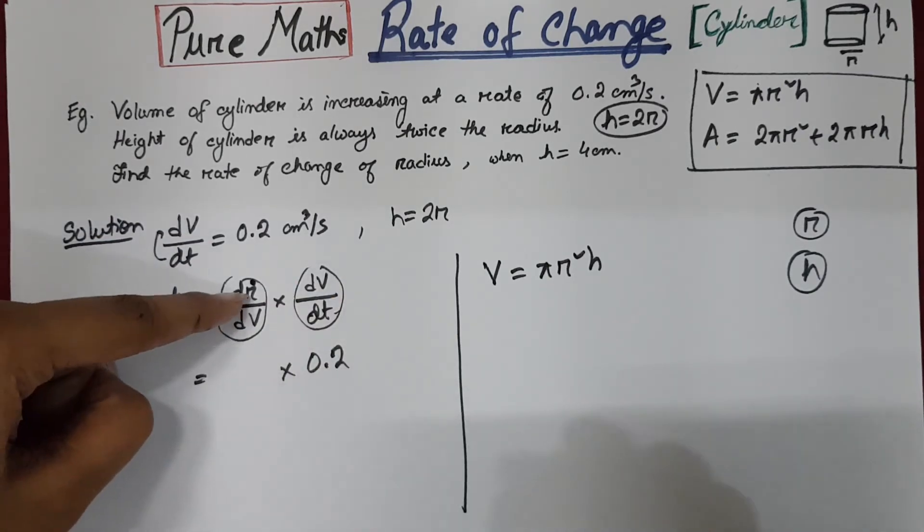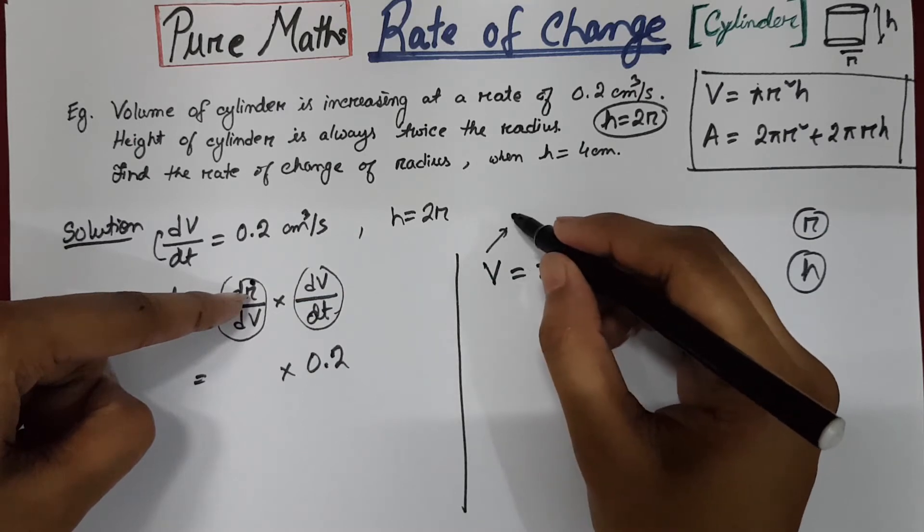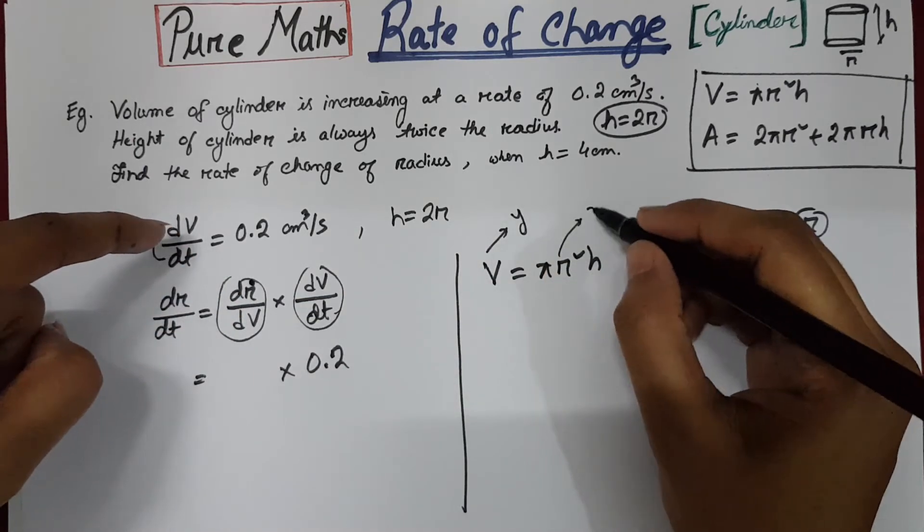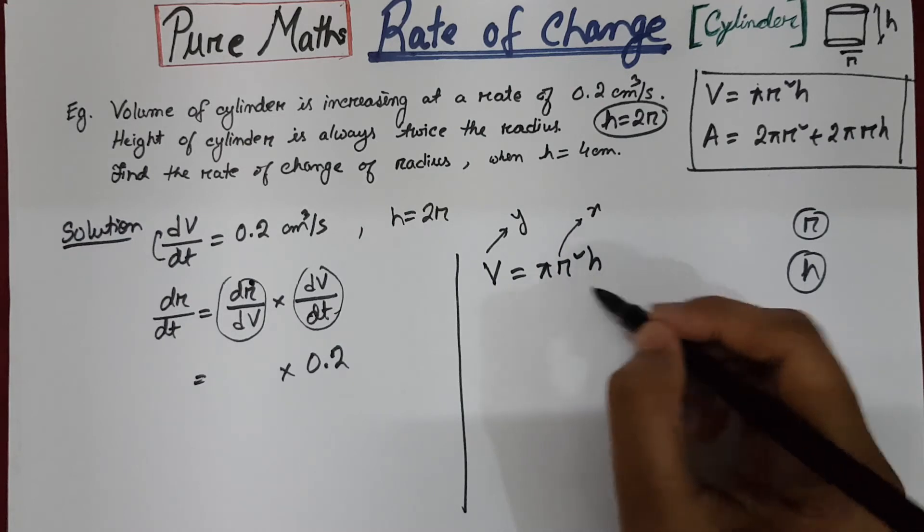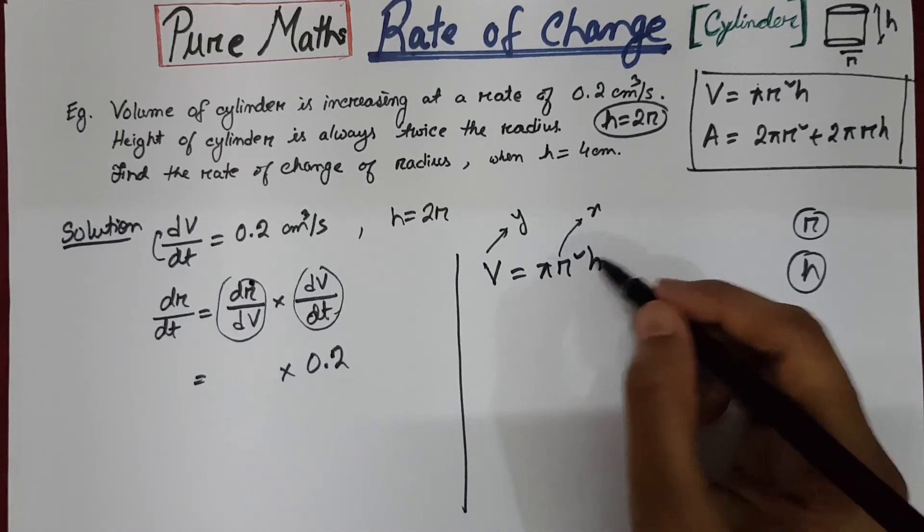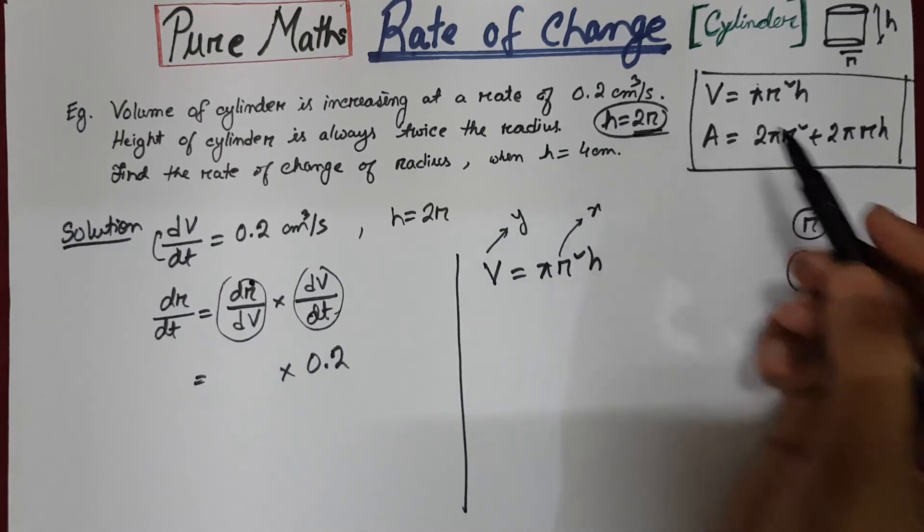So it means volume is your y and radius has to be your x. So the height here has to be substituted from the given relationship.